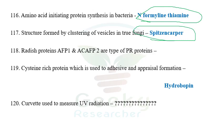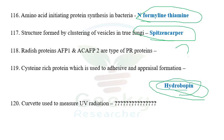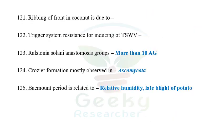The next question: radish proteins AFP1 and AFP2 are types of antifungal proteins — I don't know further details. The next question: the 16-cysteine-rich proteins used in adhesive and appressorium formation are hydrophobins. The next question: the cavity used to measure UV radiation — I don't know the answer. The next question: ribbing of coconut — symptoms of ribbing and other disorders of coconut are caused by certain pathogens or deficiencies; more detail was not recalled.